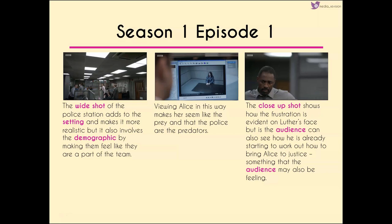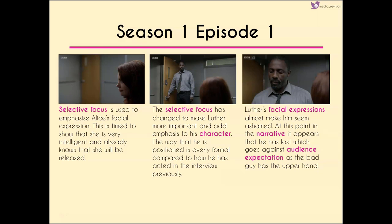We then have a wide shot of the police station, which adds to the setting and makes it more realistic, involving us because we again feel part of the team — we can imagine ourselves sitting at one of those desks. We then get another shot of Alice sitting on her own in the interview room — literally locked up — making her seem like the prey, with the police in this instance as predators. The close-up of Luther shows frustration at not being able to simply put Alice away, but we can also see how he's already starting to work out how to bring her to justice — which is a gratification of crime drama, allowing the audience to play along and act as pseudo-detective.